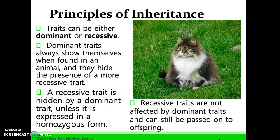Traits can either be dominant or recessive. Dominant traits always show themselves when found in an animal and hide the presence of a more recessive trait. A recessive trait is hidden by a dominant trait unless it is expressed in a homozygous form — two recessive alleles. Recessive traits are not affected by dominant traits and can still be passed on to offspring even if they are hidden by a dominant trait.